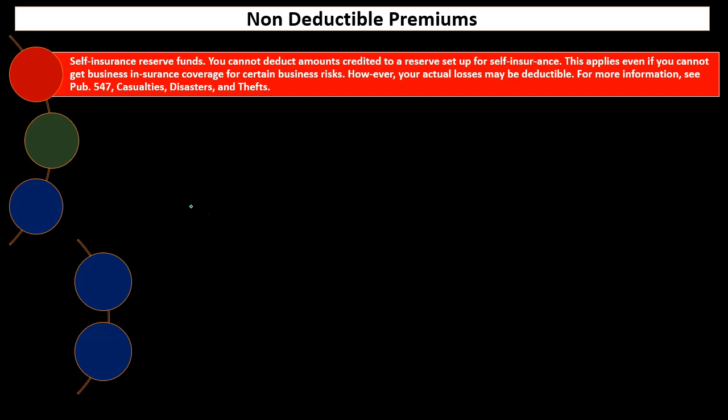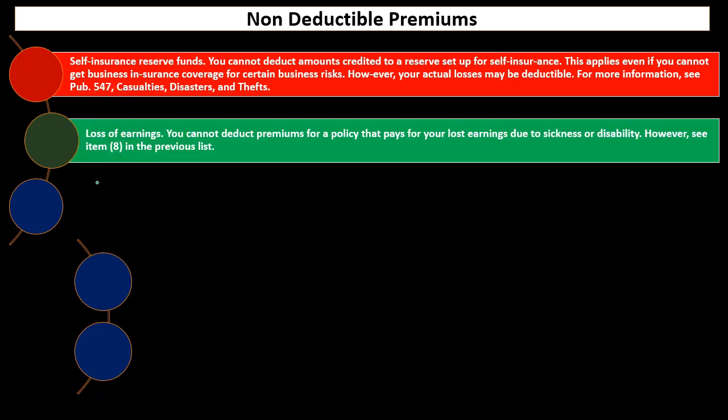Non-deductible premiums. These are the insurance premiums that would not be deductible. Self-insurance reserve funds: you cannot deduct amounts credited to a reserve set up for self-insurance. This applies even if you cannot get business insurance coverage for certain business risks. However, your actual costs may be deductible. For more information, see Publication 547, Casualties, Disasters, and Thefts, available on the IRS website at irs.gov.